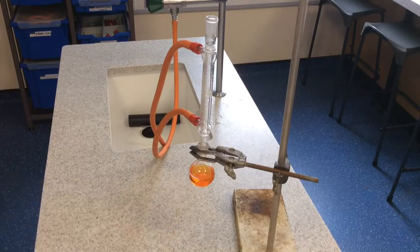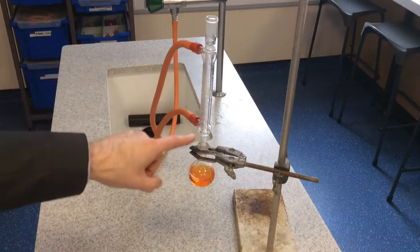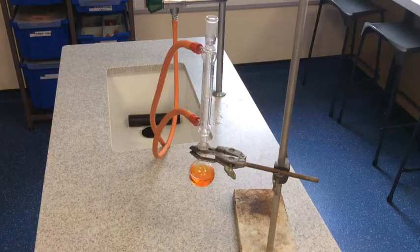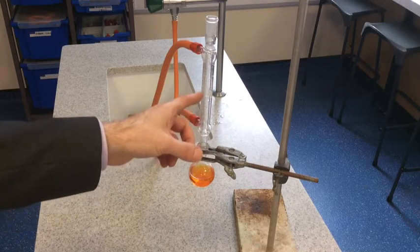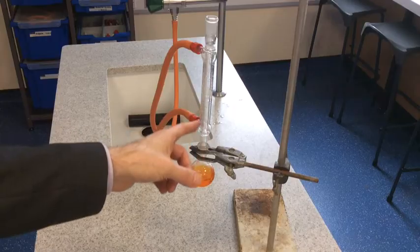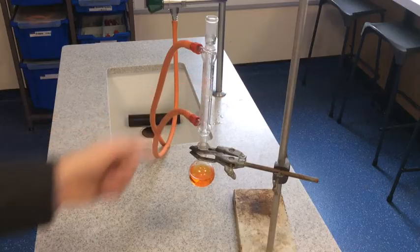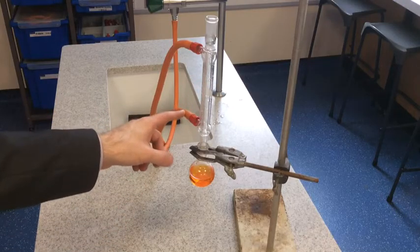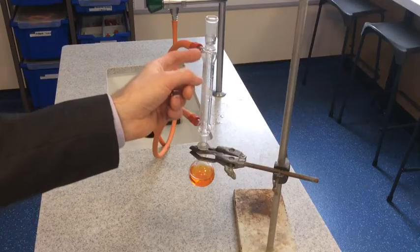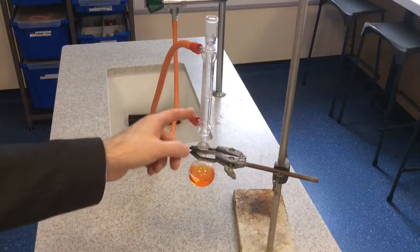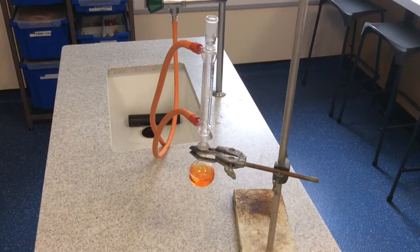This piece of apparatus here is what we call a condenser. Essentially it's two glass tubes in one. We've got a central glass tube running right through the middle of the apparatus, and wrapped around that is a second glass tube which is going to allow a flow of cold water. It's going to come in at the bottom here and flow up and out at the top. This will surround the inner glass tube and you'll see the purpose of that once we get the experiment underway.